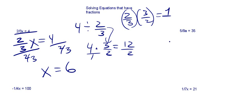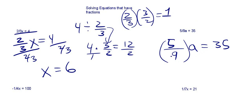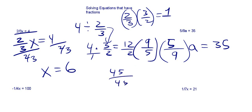Building on that, let's think about this next example. We've got 5 ninths a is equal to 35, and we want this to be 1a. So if we could multiply 5 ninths by some number to give us 1, it might save us some steps. The reciprocal is 9 fifths — 9 fifths times 5 ninths is just 1, because 9 times 5 is 45, 5 times 9 is 45, and 45 divided by 45 is just 1.